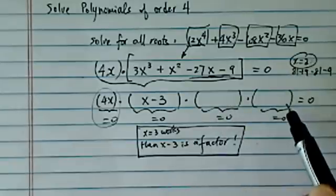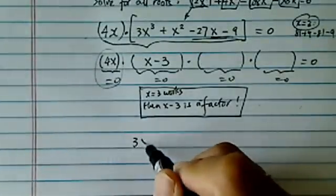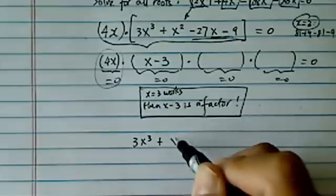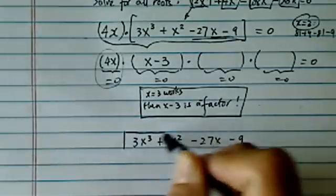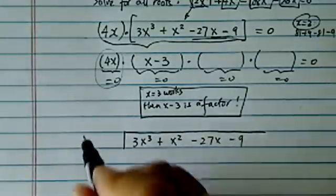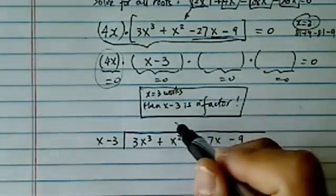So x - 3 becomes one of the factors. In order to find the other two factors, we will have to do long division or synthetic division, depending on your personal preferences. But over the years, I have to say, long division became one of my favorite ones. I don't have any reason. I just happen to like it. I think it's easier for me anyway.